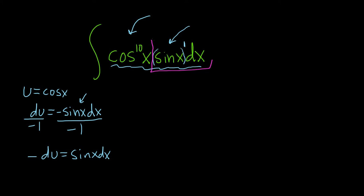So sine x dx is going to get replaced with negative du. Let's go ahead and pull out that negative sign. And then we're left with cosine to the 10th power. But cosine is u, so this is u to the 10th power.